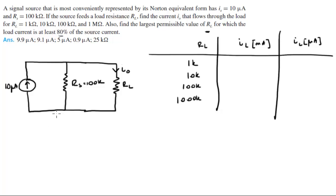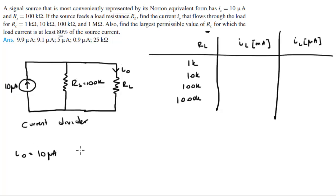Let's come up with a formula for IO. We're going to use the current divider in order to find IO — the current going through the load. IO is equal to the original current coming out, which is 10 pA, times the resistance of the other arm RS, over the sum of the two resistances RS plus RL.